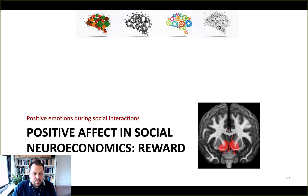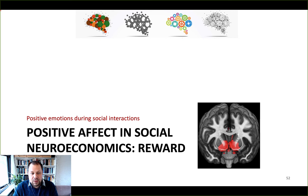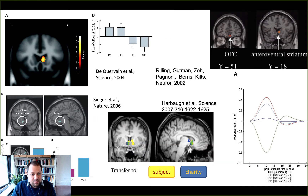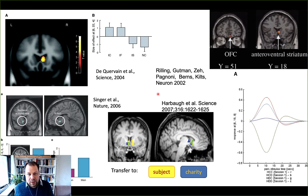I now want to move on to the positive side of things, namely the role of positive affect in social neuroeconomics, particularly in interactive experiments. Let's revisit a number of studies we talked about last week. They include the study by Rilling et al. using the prisoner's dilemma game and identifying two regions that are part of the valuation system, namely striatum and OFC, that show larger response during mutual cooperation trials.